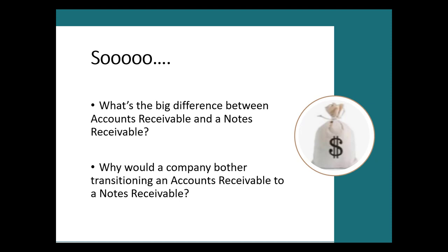Most accounts receivable are due within a short period — usually 30, 60, or 90 days — and are classified as current assets. Notes receivable, however, can be due over a longer period and might be classified as either current or non-current assets depending on when they are due. Everything beyond a year will be considered a long-term or non-current asset.